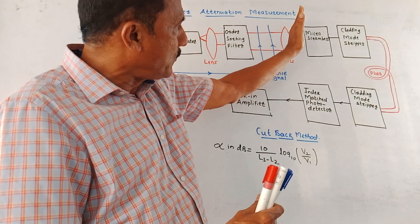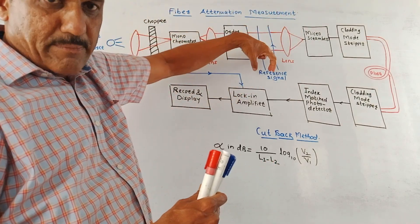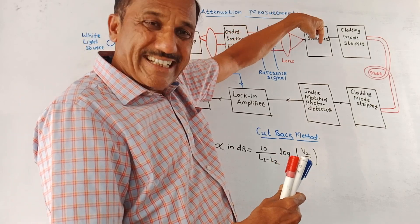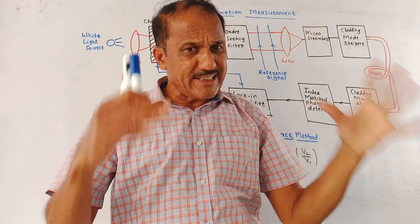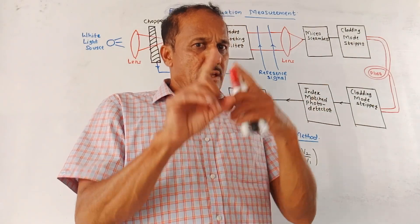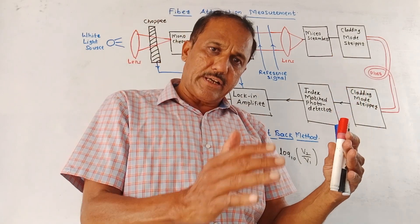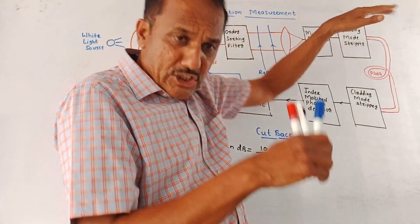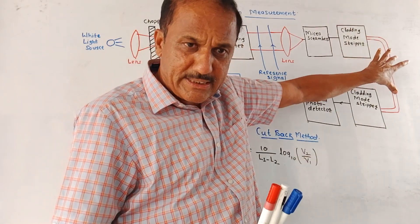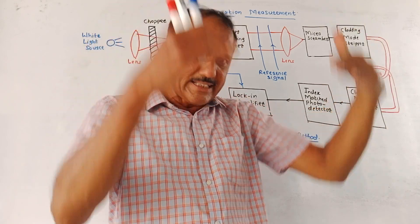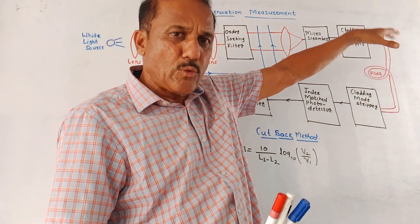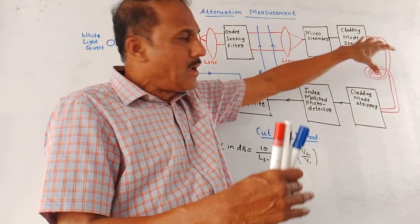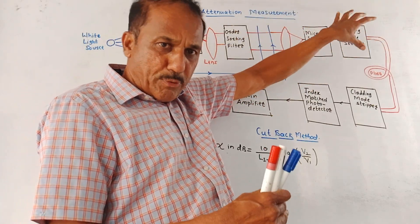Then its output is again applied to a lens for focusing. This is the reference signal, used for reference purposes. Using a lens, this output is given to the micro scrambler. The micro scrambler is used in case of multi-mode fibers because it is required that readings be taken under steady state conditions. If you don't want to use the micro scrambler, at the start, before taking actual readings, some dummy fiber is connected. Once things settle, then the original fiber for which you need to make the measurement is connected. You can also use the micro scrambler to adjust the power fluctuations at the output.